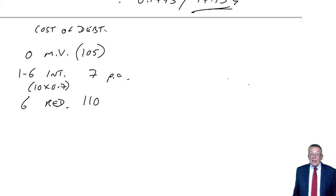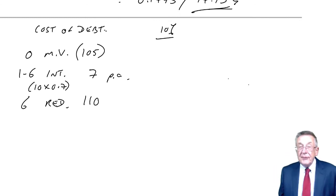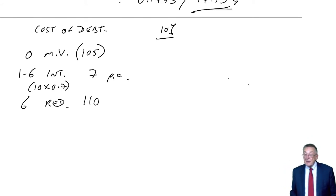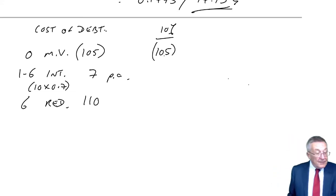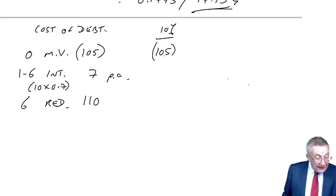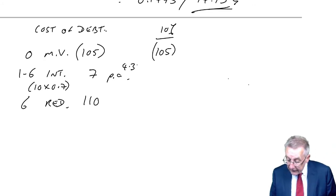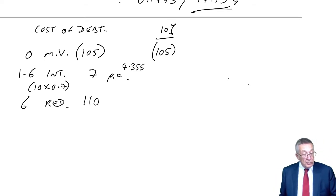We need the internal rate of return, the two guesses. Again, I'll guess at 10% first, simply because it's in the middle of the tables. So $105 now is $105. The annuity, $7 a year for six years. So the six year annuity factor of 10% is 4.355. The redemption, a single one-off flow, so the ordinary present value factor, six years 10%, is 0.564.